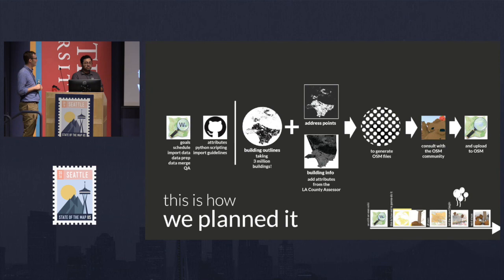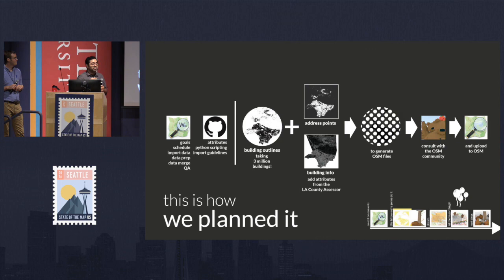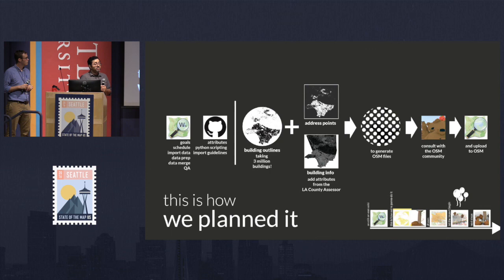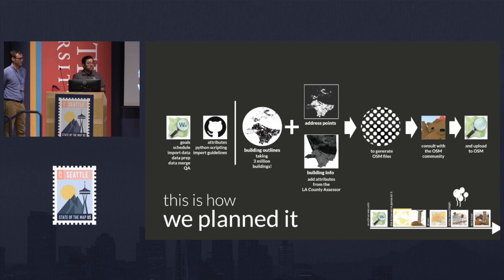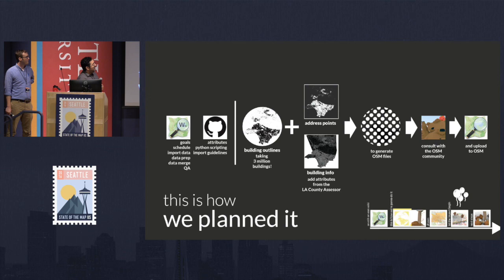So this is how we planned it. We used the OpenStreetMap wiki to set goals, schedule, importing the data, data prep, data merge, and QA. GitHub was another platform we used to determine what attributes — like elevation and height data — needed to match with OpenStreetMap tags. We also initiated Python scripting and the import guidelines. The cool thing is we were merging three datasets: the building outlines, address points which the county also had, and building information from the LA County Assessor. The assessor has information on building type — residential, single family — how many units, and when the buildings were built. We had to discuss this with the OSM community on the list to get a go-ahead.